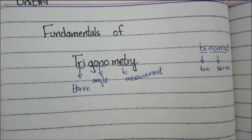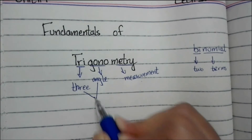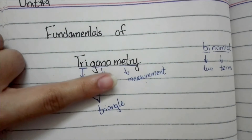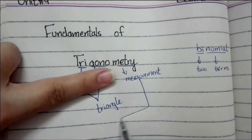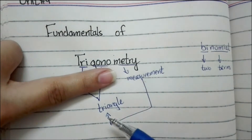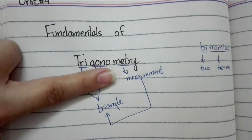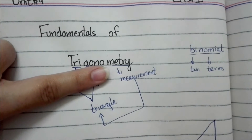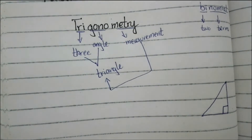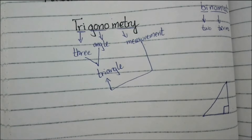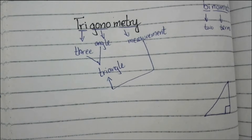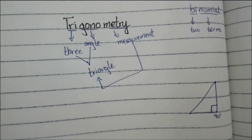So putting it together: three angles — a figure with three angles is called a triangle. The measurement of a triangle is known as trigonometry. Any triangle that is a right-angle triangle falls under trigonometry. Trigonometry applies specifically when you take a right-angle triangle — a triangle that has one angle equal to 90 degrees.